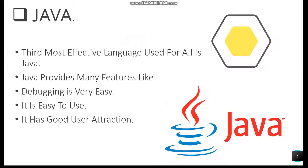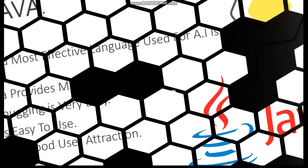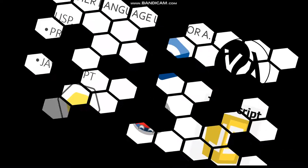The third most important language used to implement artificial intelligence is Java. Java is considered a good choice for artificial intelligence. Java provides many features: debugging is very fast and easy, it is easy to use and manage, and it offers many benefits like packages and applets. It has good user attraction.